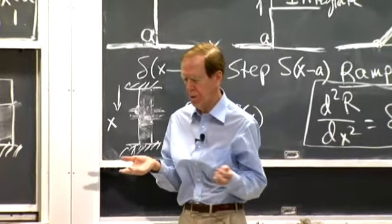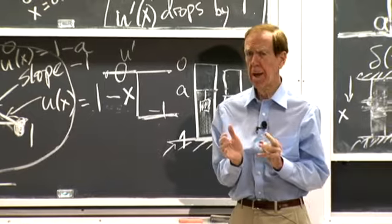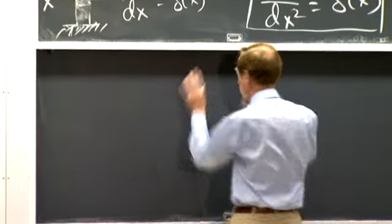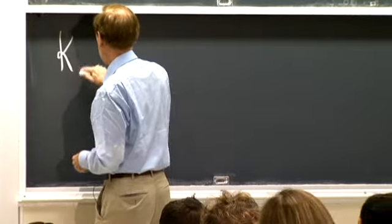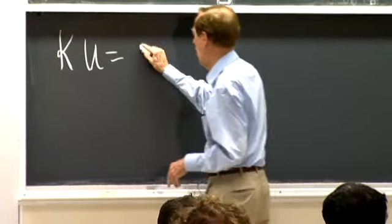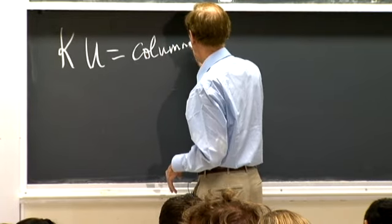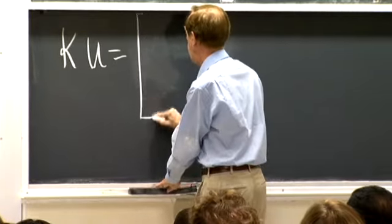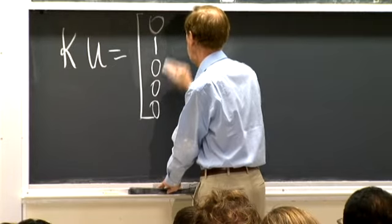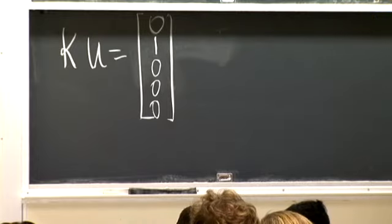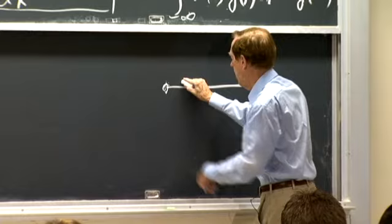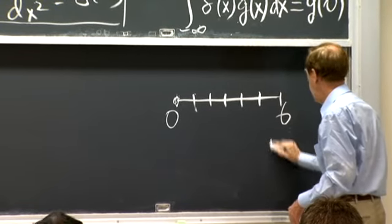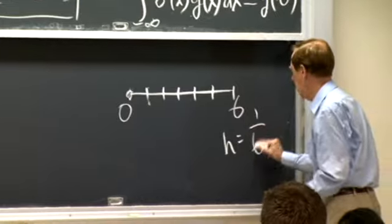Now the discrete case. We're solving Ku equal a column of the identity matrix — say the vector (0, 1, 0, 0, 0, 0) with a load at the second point. With five unknowns u1 through u5 between points zero and six, h equals one-sixth. K is our old friend with twos and minus ones on the diagonals. This will be the solution that has a load at this point — like point a in the continuous case. With five possible load points, I picked the second one.